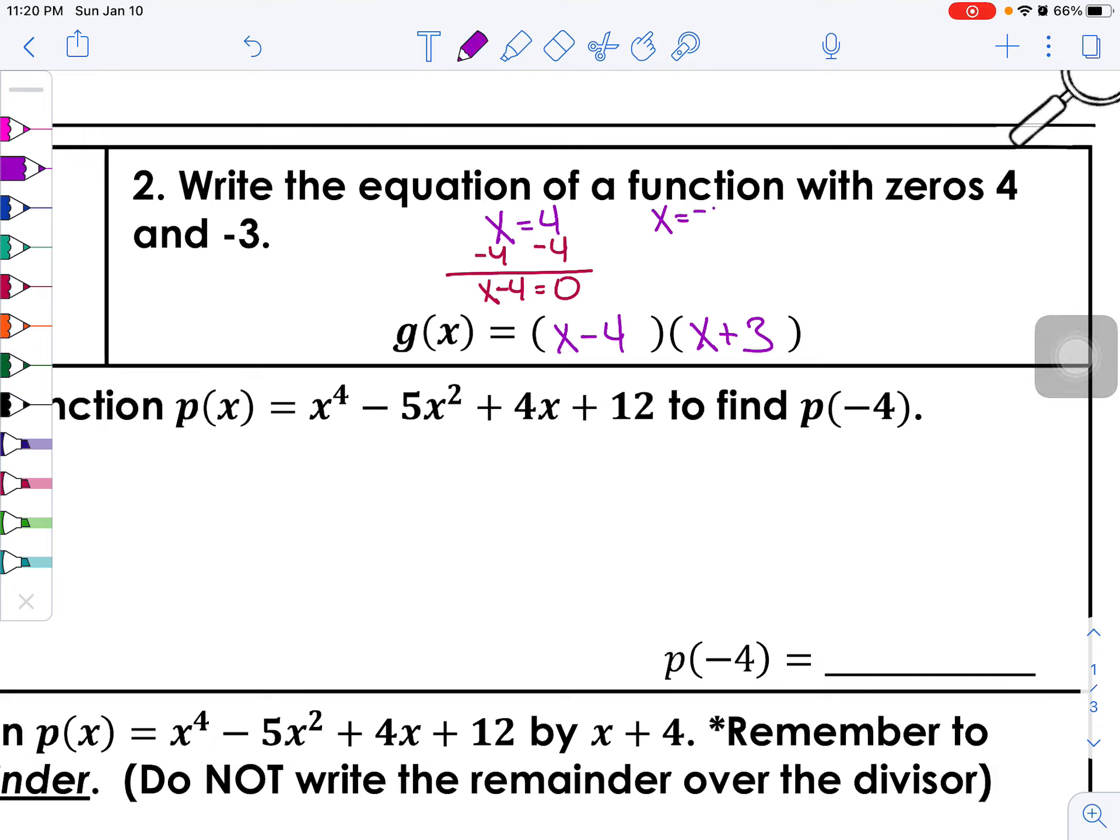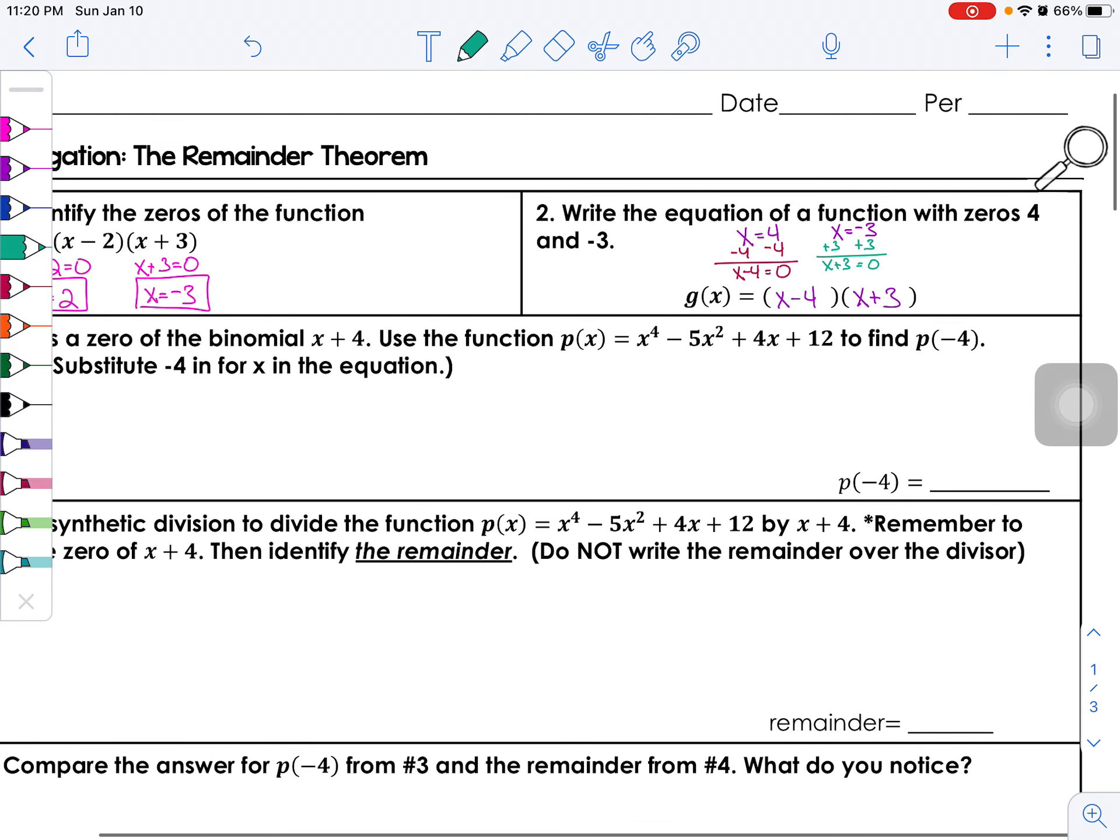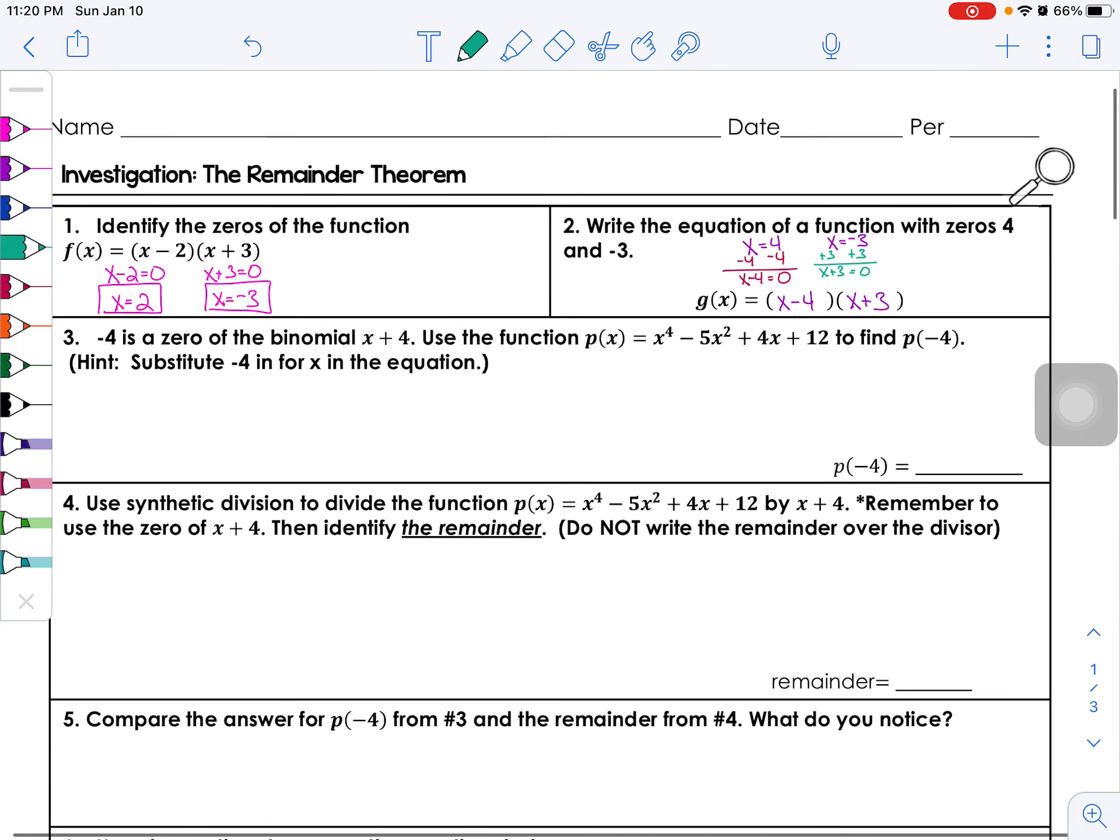You could do the exact same thing if we started with x is equal to negative 3. To make this equal to zero we would add 3 to both sides, so x plus 3 is equal to zero, and now we have the actual factor.